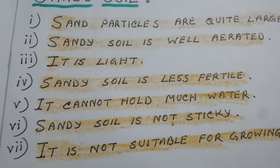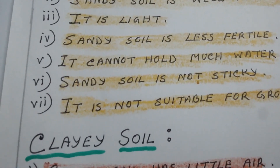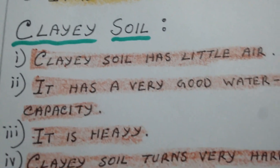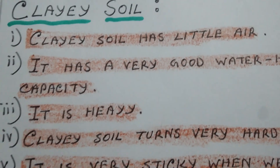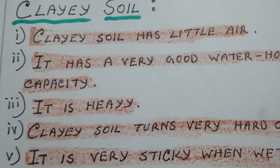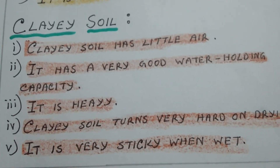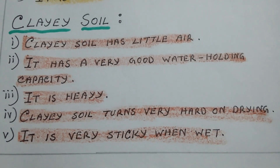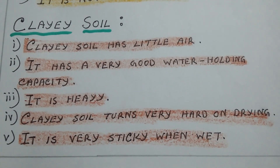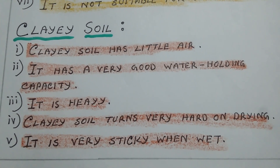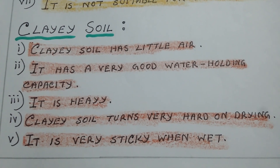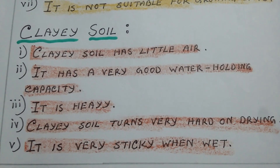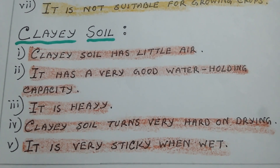Clay soil contains mainly clay, with very little sand and silt in it. It contains some humus. The features of clay soil are that clay particles, being much smaller, are packed tightly together, leaving little space for air.